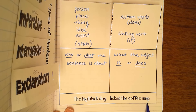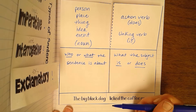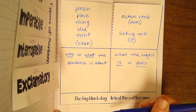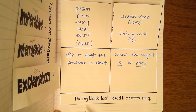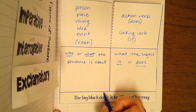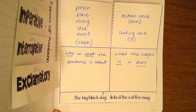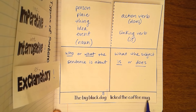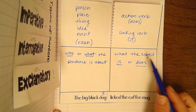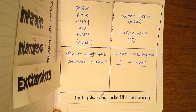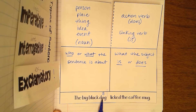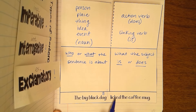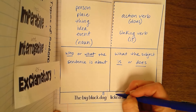So I'm going to write underneath here what the subject is or does. Now that sounds kind of goofy right now, but as we get some examples worked with, you'll understand that the predicate is what the subject is or what the subject does. Let's look down at this sentence at the bottom here — they have it sectioned off to show a natural break. The big black dog licked the coffee mug. I'm going to label the word 'dog' with a little S on top — that is who or what the sentence is about. Mug is also a noun, but that's not the main subject. The dog is a noun, but it is the subject because it is what is doing the action, licking the coffee mug.